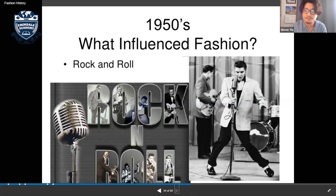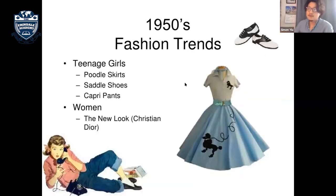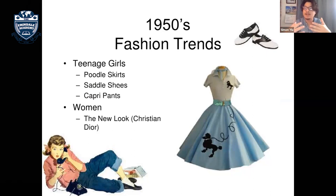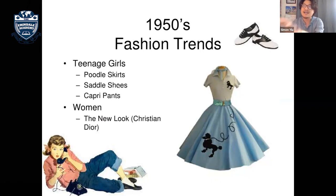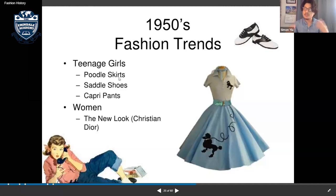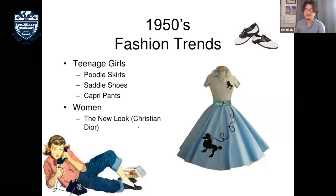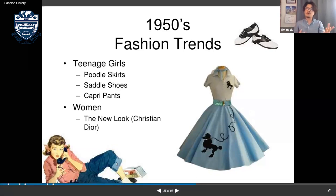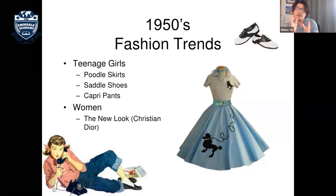The 1950s was the first era in hundreds of years where the fashion industry seriously targeted children's clothing. For teenage girls, the poodle skirt was iconic — a skirt with a literal poodle illustration on it. They also wore saddle shoes — two-tone shoes — and capri pants, which are high-cut jeans.